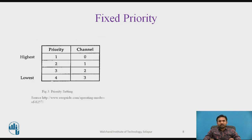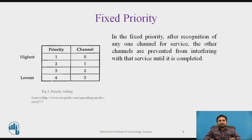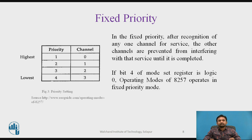About fixed priority: channels 0, 1, 2, and 3 have different fixed priority levels 1, 2, 3, and 4. In fixed priority mode, after recognition of any one channel for service, the other channels are prevented from interfering with the service until it is completed. If bit B4 of the mode set register is logic 0, the 8257 operates in fixed priority mode.